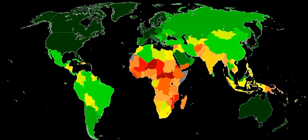The Human Development Index is a composite statistic of life expectancy, education, and income per capita indicators. A country scores higher HDI when the life expectancy at birth is longer, the education period is longer, and the income per capita is higher. It is used to distinguish whether the country is a developed, a developing, or an underdeveloped country.